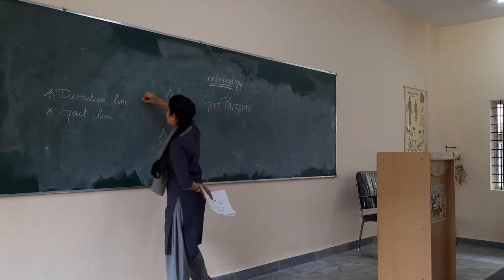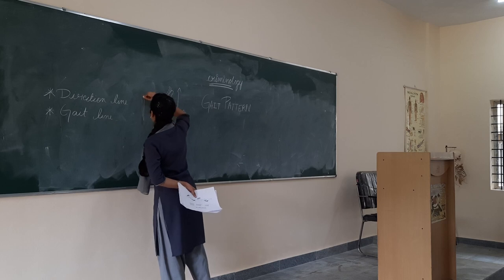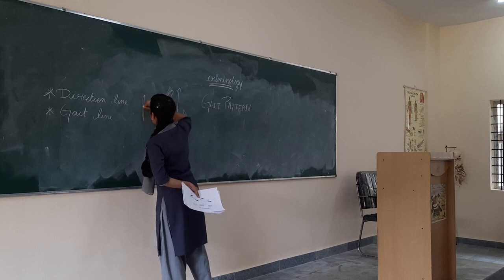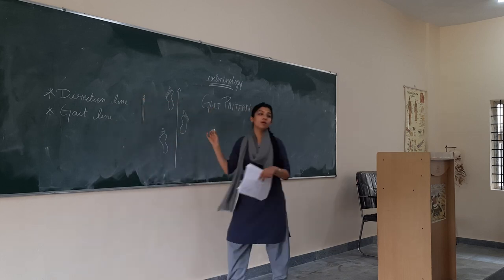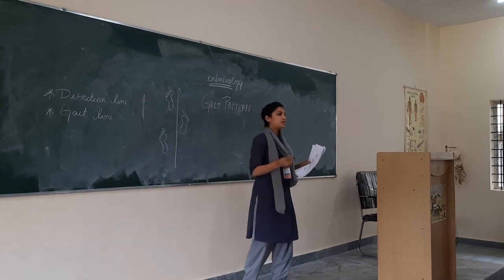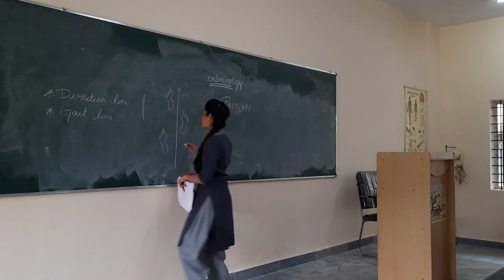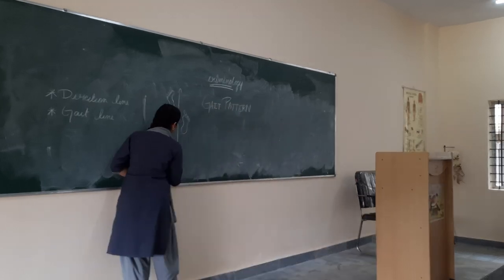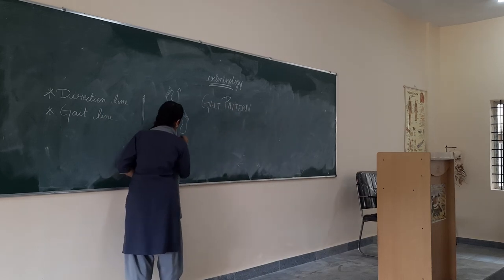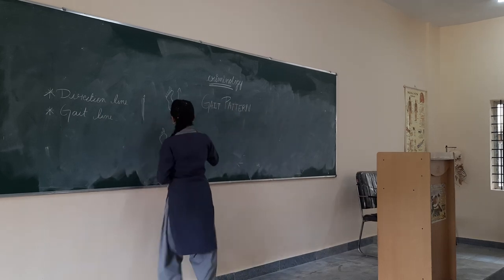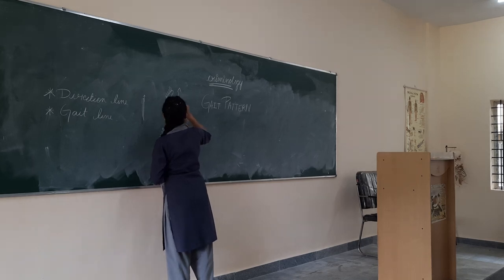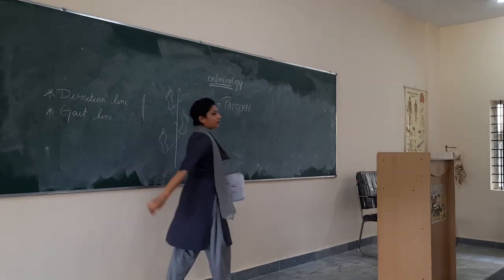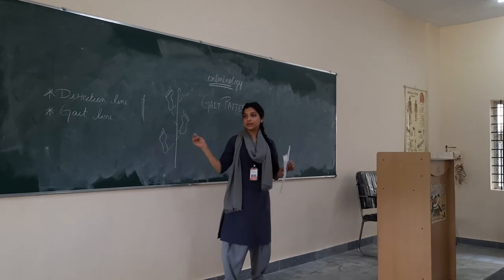Whereas in a normal walk on any given day, we would see a sort of zigzag pattern. You can see the zigzag patterns and so on it continues. This is the gait line.